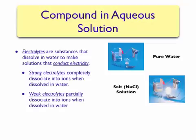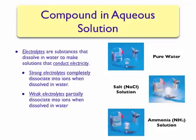Weak electrolytes, on the other hand, only partially dissociate into ions when dissolved in water, resulting in fewer ions in the solution. Ammonia, or NH3, is a weak electrolyte. Therefore, when a solution containing ammonia is connected to our simple conductivity apparatus, the light bulb only lights up dimly.